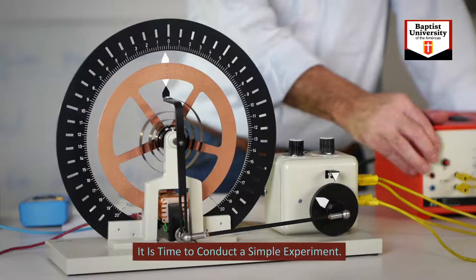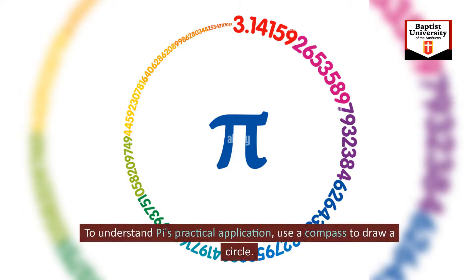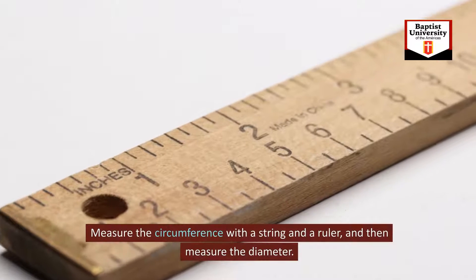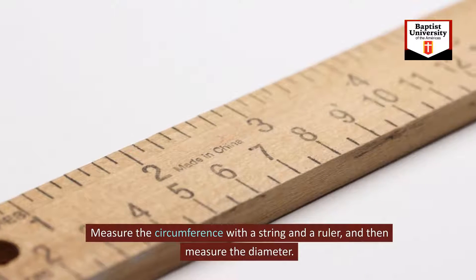It is time to conduct a simple experiment. To understand pi's practical application, use a compass to draw a circle. Measure the circumference with a string and a ruler, and then measure the diameter.